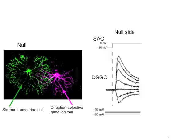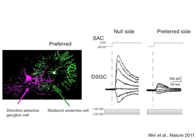However, when a starburst-amacrine cell on the preferred side is stimulated, we observe a weaker GABAergic conductance. This indicates that the circuit is hard-wired to provide asymmetric inhibition to direction-selective ganglion cells.